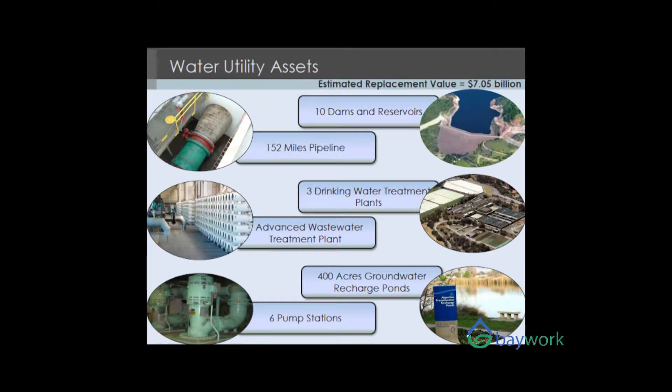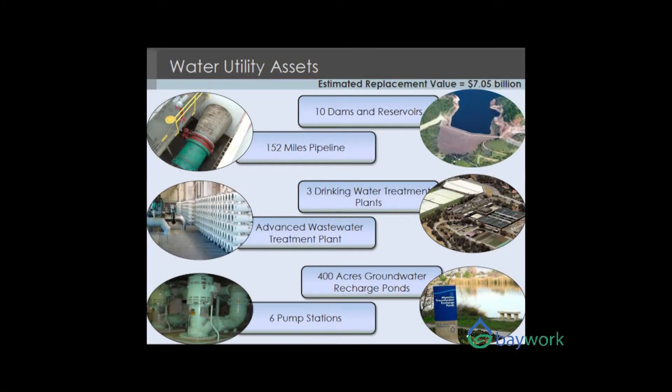In our water utility, we have 10 dams and reservoirs with a total storage capacity of about 170,000 acre feet. We have 152 miles of pipeline ranging in diameter from 24 inches to 120 inches. We don't have a lot of pipeline but it's all large pipeline. We have three drinking water treatment plants with capacities of 40, 80, and 100 MGD.